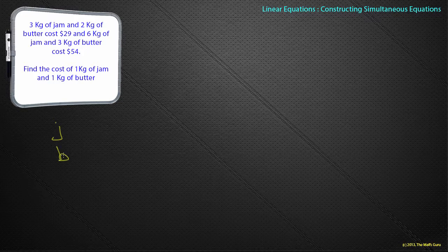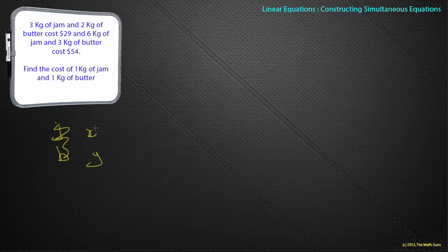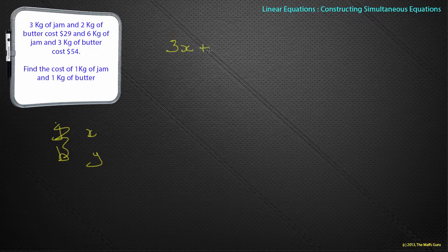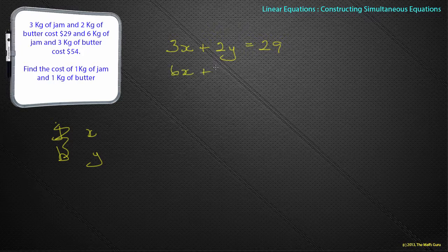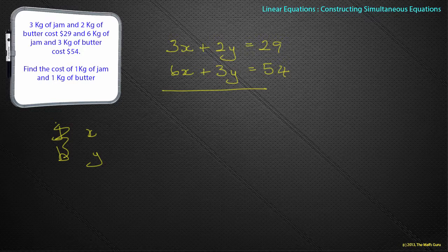Maybe not. The b looks suspiciously like a number 6. And in an exam, that might be complicated. So let's actually stick with x and y. Universal, they know what we mean. So I now know that 3 kilograms of jam, well, x stands for 1 kilogram of jam, so 3 kilograms will be 3x, and plus 2 kilograms of butter. So 2y is equal to $29. And 6 kilograms of jam and 3 kilograms of butter is equal to $54. And lo and behold, once again, I have my simultaneous equation.